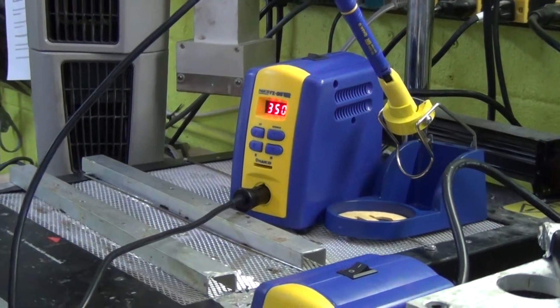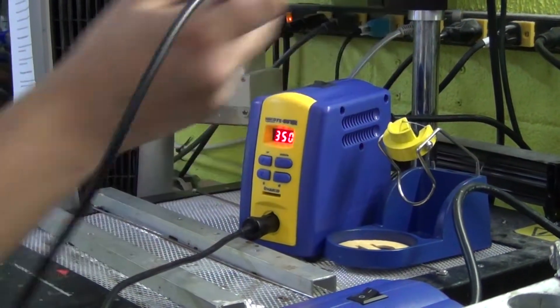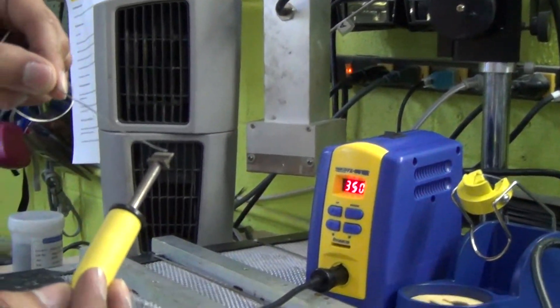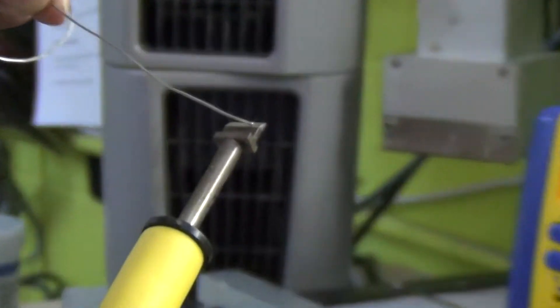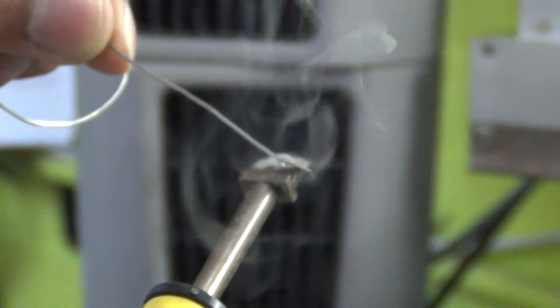Most units are defaulted to 350. Obviously it melts solder.